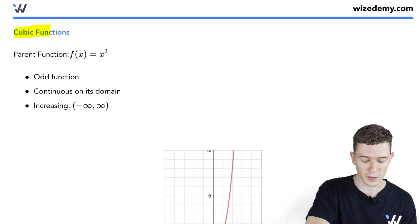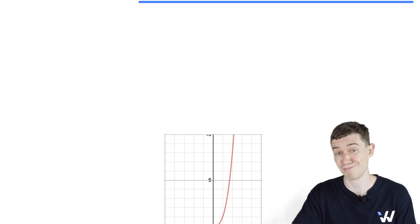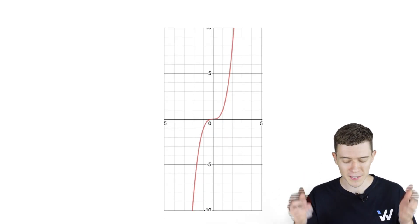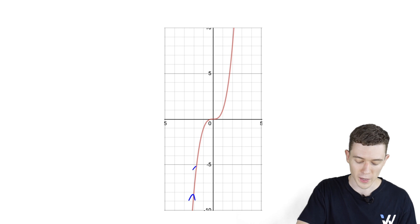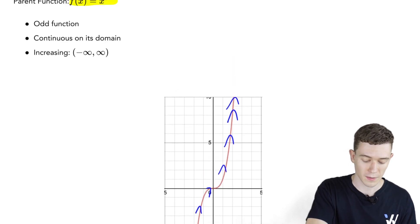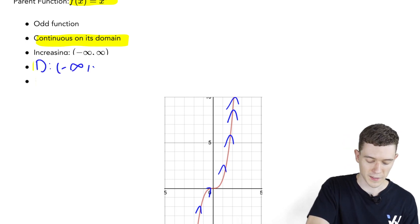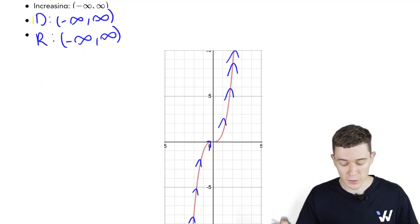Cubic functions have parent function f of x equals x cubed. This is an odd function — rotate it 180 degrees and it's the exact same picture. It's always increasing from left to right, and it's also continuous. The domain and range are both all real numbers, minus infinity to infinity, as this graph extends forever in every direction.